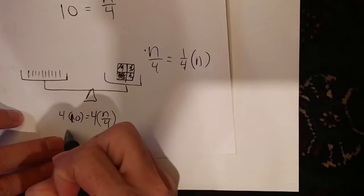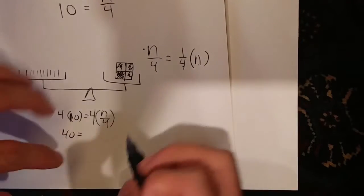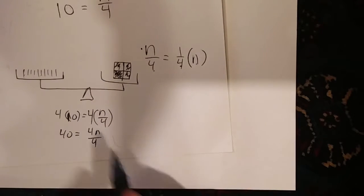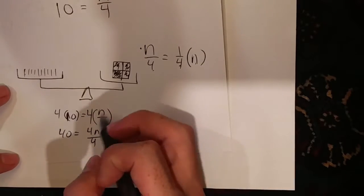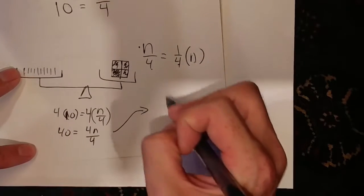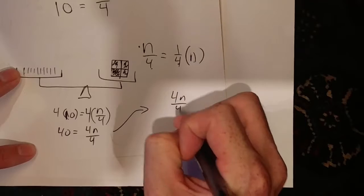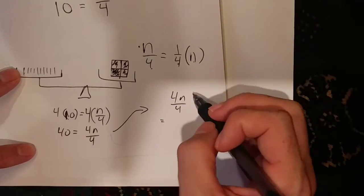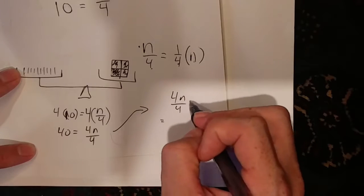And so what's going to happen here is I have 40 is the same as four n over four. Now of course, four n over four, four divided by four is in fact one. And I'll prove that. Four n over four, if I remember my fraction property, can be the same as four out of four times n.